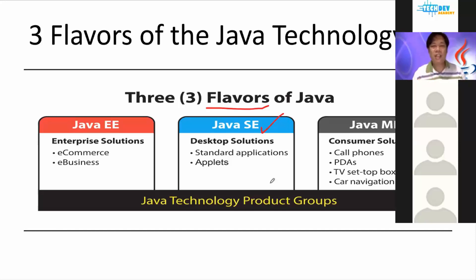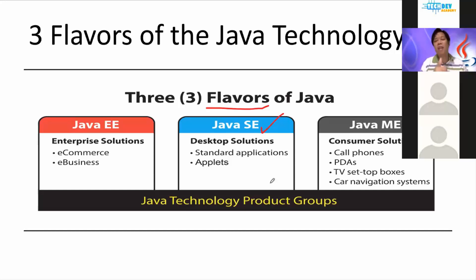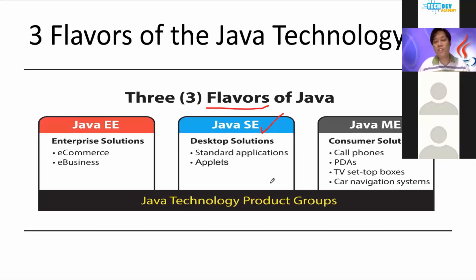Java was actually created by students, faculty members, and researchers from Stanford University. So Stanford University has already produced two technology giants. Java came from Sun Microsystems — Sun basically means Stanford University Network — and Google came from PhD students who were also from Stanford University.